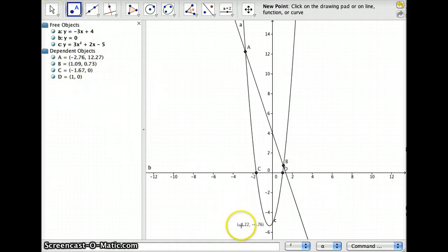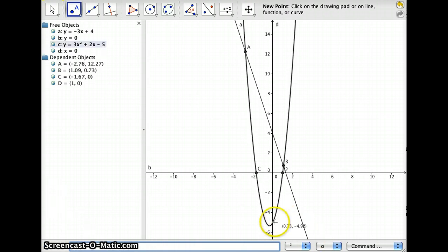Likewise I can do the y-intercept using the same trick. Y-intercept is at the point, or when it crosses line x equals 0, which is the y-axis. And so I can just again hover my mouse over top of it, and I get point E at 0, negative 5. So the y-intercept is at 0, negative 5.